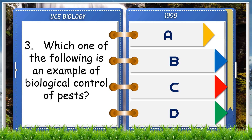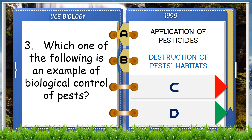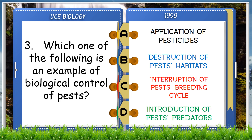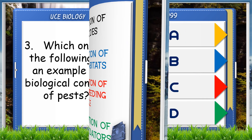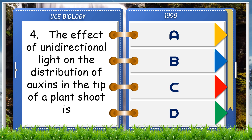Which one of the following is an example of biological control of pests? A. Application of pesticides, B. Destruction of pest habitats, C. Interruption of pest breeding cycle, D. Introduction of pest predators. The answer is D, introduction of pest predators.